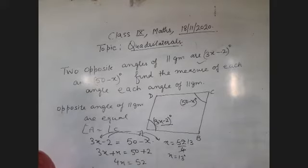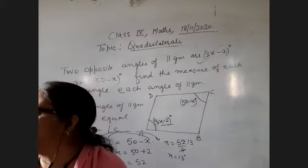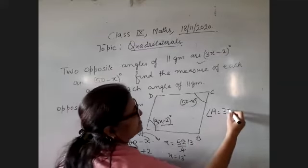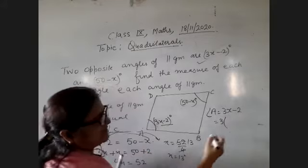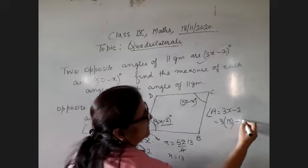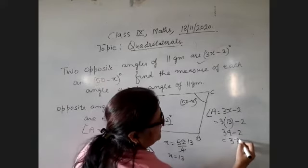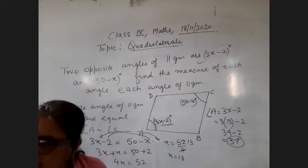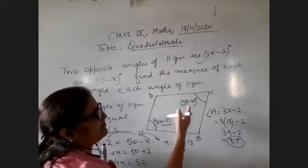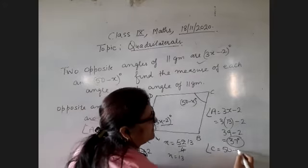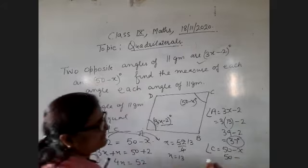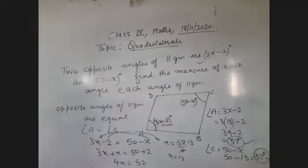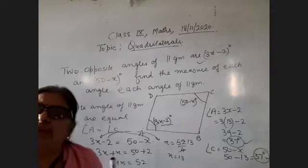Now you have to find the measure of each angle. First I will find A and C. Your angle A was 3x − 2. What do we put in place of x? 13. So we get 39 − 2 = 37 degrees. Angle A is 37 degrees. So angle C should also be equal. Let me verify by substituting — x = 13, so 50 − 13 = 37. So angle A and C are both 37 degrees — equal. Now you have to find B and D also.